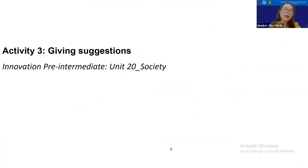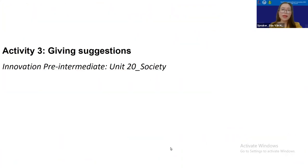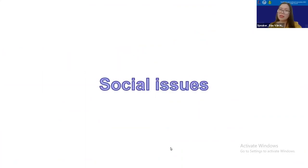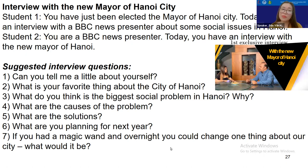Activity number three focuses on the speech act of giving suggestions. The topic could be about society or urbanization. Students work in pairs: student number one plays a person who has just been elected mayor of Hanoi city, who has an interview with a BBC news presenter about some social issues in Hanoi. Student number two is the BBC news presenter interviewing the new mayor. Teachers may want to put some suggested interview questions on the screen or board so that students can prepare for this activity.